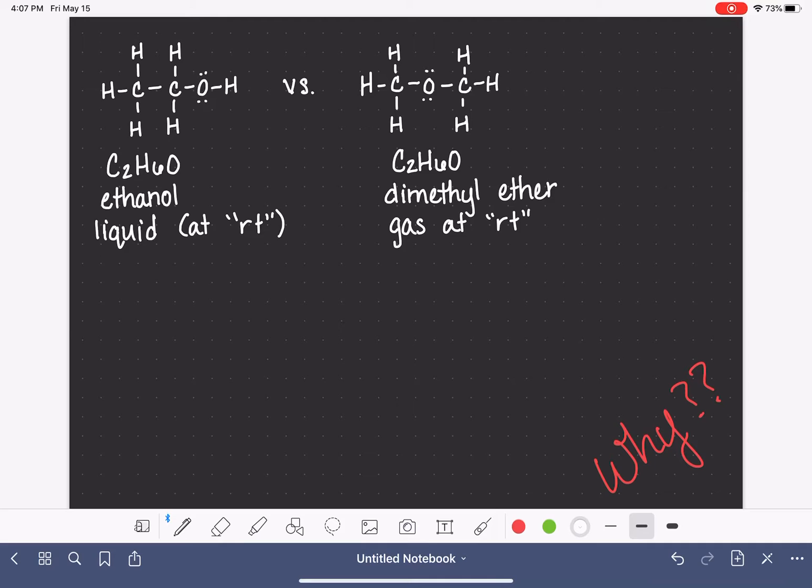They have very different boiling points. A boiling point is the temperature at which a substance boils. It goes from the liquid phase to the gas phase. Ethanol has a boiling point of 78 degrees Celsius. Dimethyl ether has a boiling point of negative 23 degrees Celsius. So that's a 100 degree difference in boiling point between the two. It's a huge difference in physical properties.